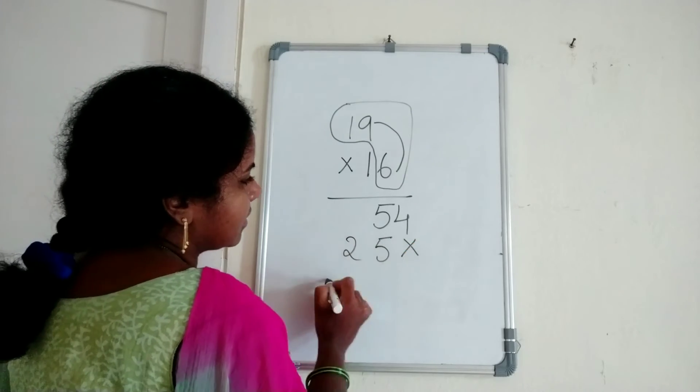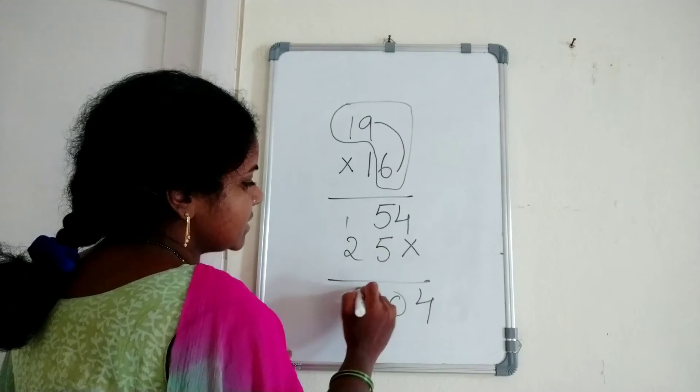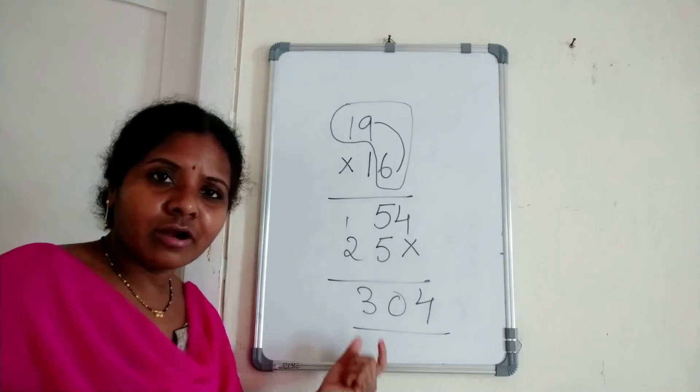Add: 5 plus 5 equals 10. Then 2 plus 1 is 3, not 4. The answer is 304. Got it all of you?